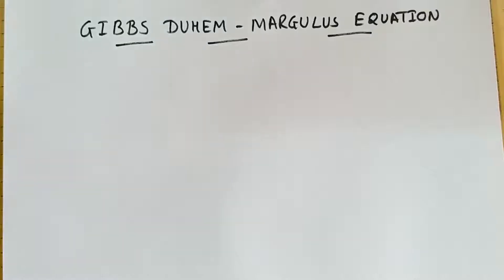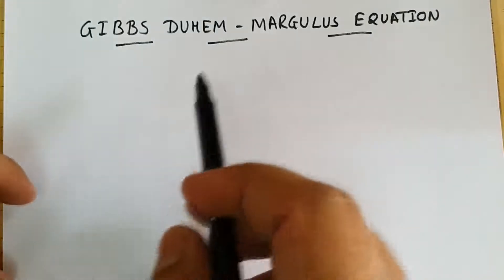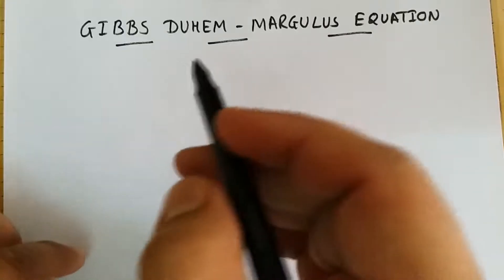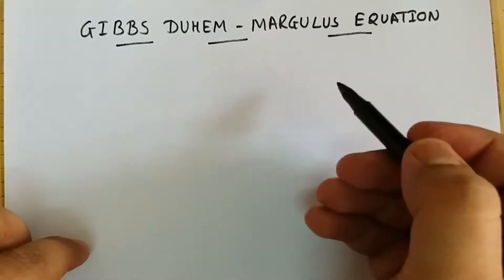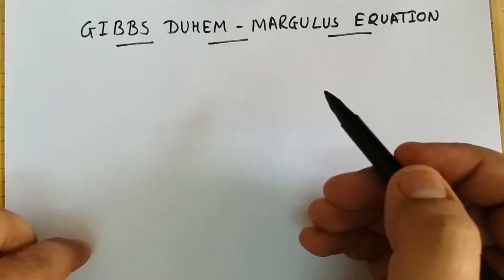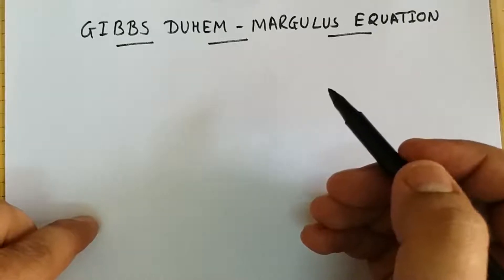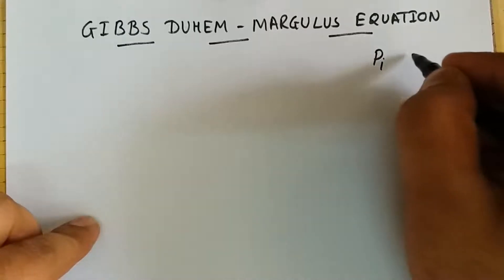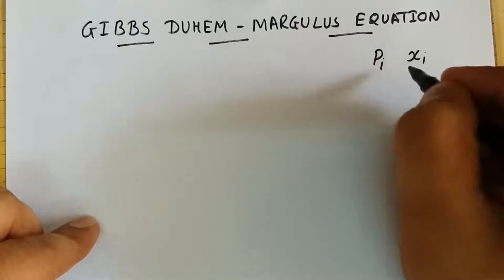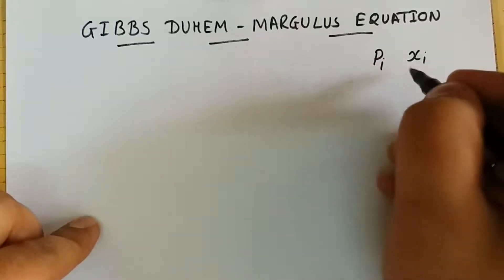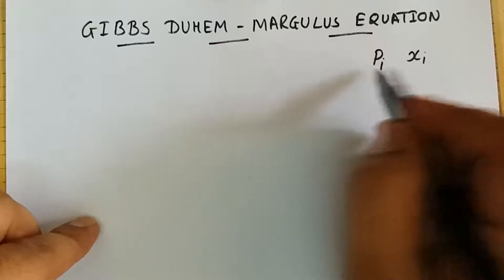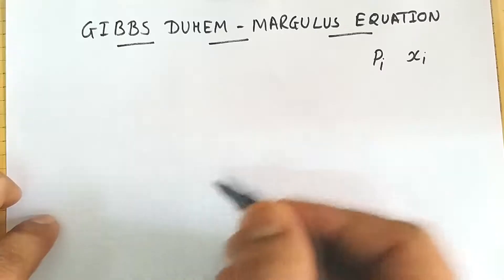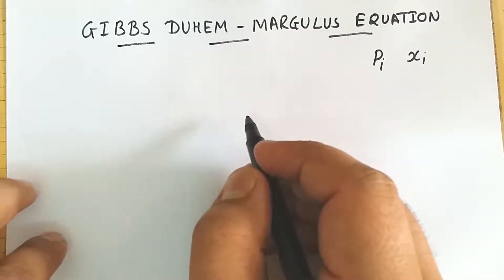Hi friends, welcome back. Today we are going to discuss the Gibbs-Duhem-Margules equation. This equation provides information relating partial molar vapor pressure and composition of various components in the solution. We can relate partial pressure pi of any constituent to its mole fraction, and with the help of this equation it gives the correlation between partial molar vapor pressure and composition.